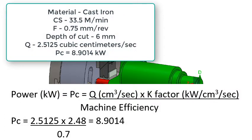The next step is to calculate the power required for the cut. Multiply Q in cubic centimeters per second times the K factor in kilowatts per cubic centimeter per second, then divide by the machine efficiency.